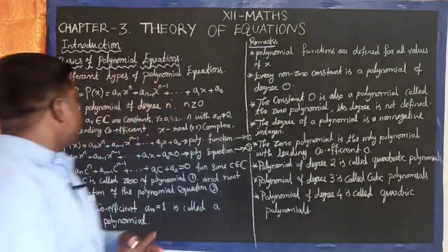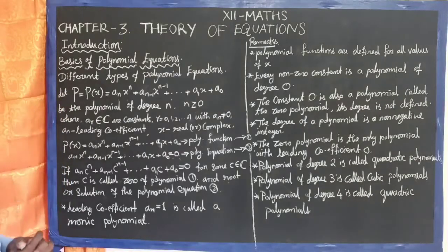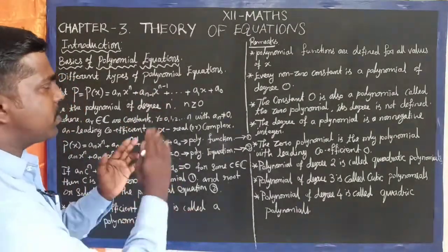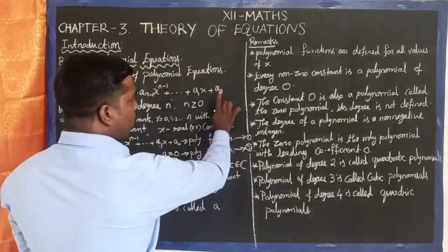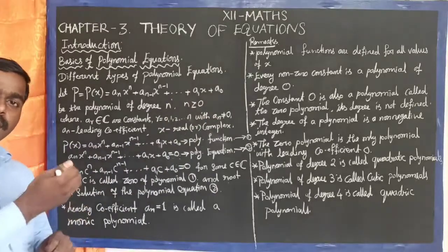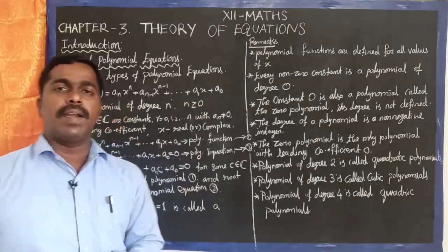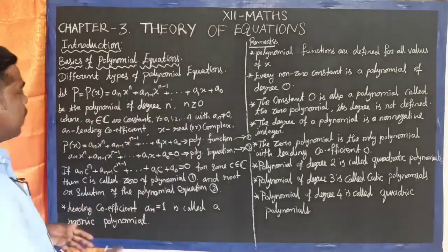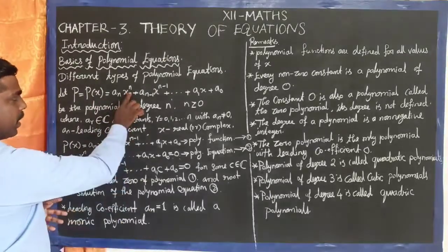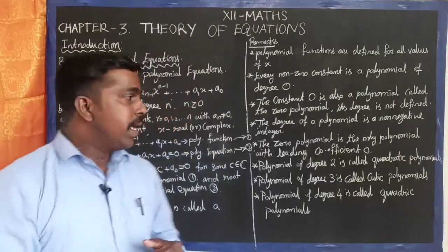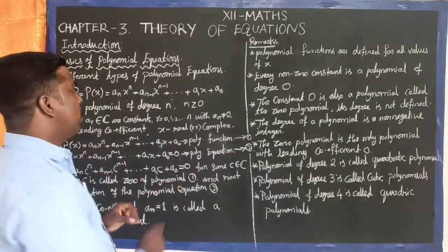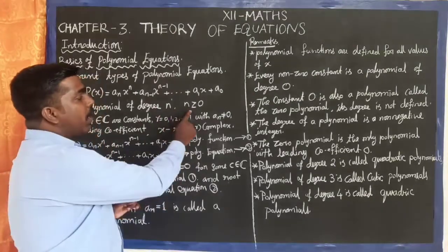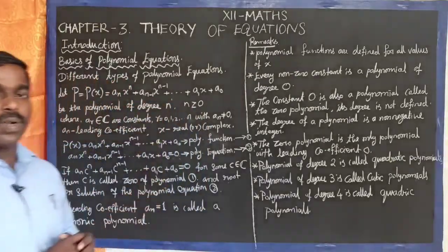The polynomial function P(x) is defined as: P(x) = aₙxⁿ + aₙ₋₁xⁿ⁻¹ + ... + a₁x + a₀. The degree is the highest power of the variable, and the exponents of x are non-negative integers, meaning n is greater than or equal to 0.